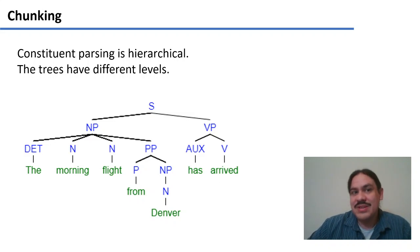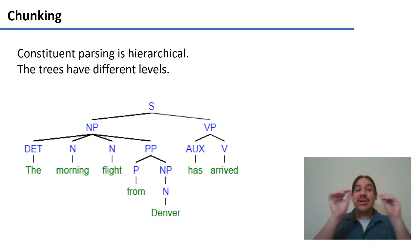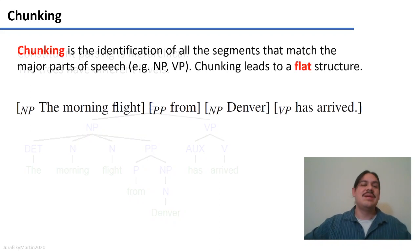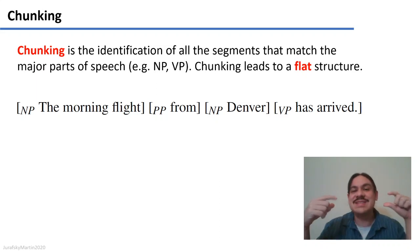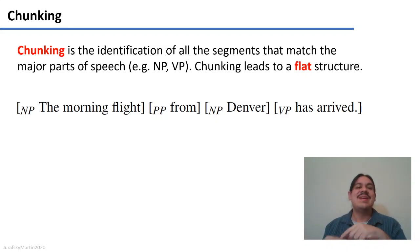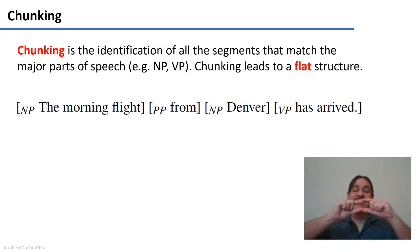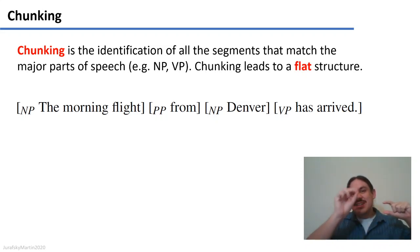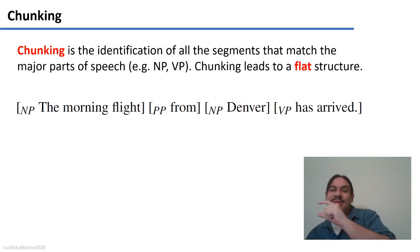As we know from previous videos, constituency parsing is hierarchical — trees have different levels and different levels of branching. However, chunking is flatter. Chunking is the identification of segments that match the major parts of speech, for example getting the noun phrases or the verb phrases. Chunking parses have flat structures because we are not interested in the connections between them — we just want to extract the noun, then the verb, then the noun after the verb.